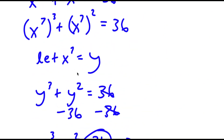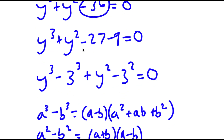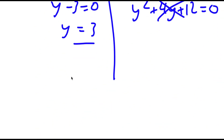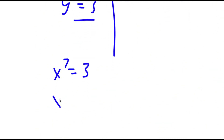Remember how we let x to the power of 7 equal y. So now I have x to the power of 7 equal 3, meaning x is equal to the 7th root of 3.